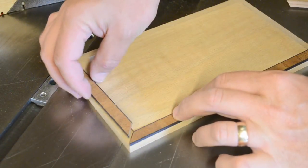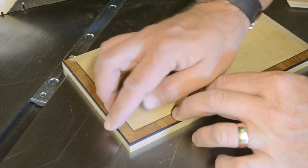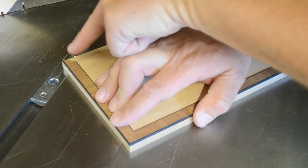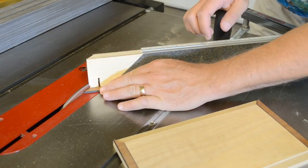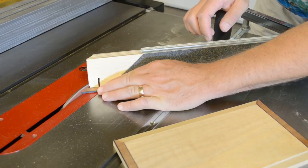One end of each part is sanded to 45 degrees. Then the opposite end is sanded and light cuts taken from it until the part is perfectly fitted.